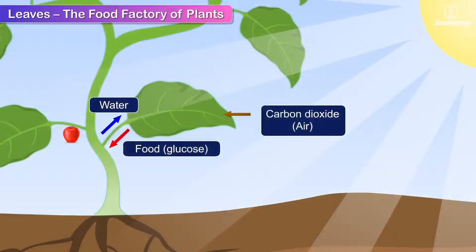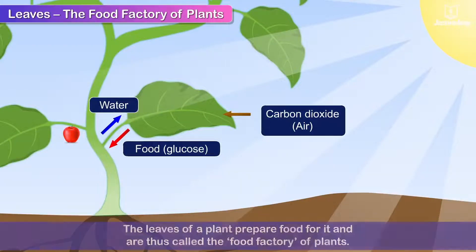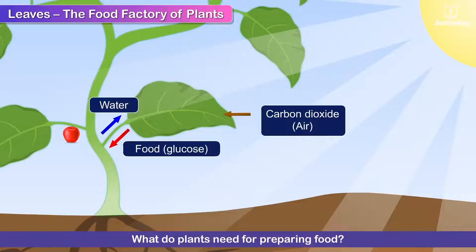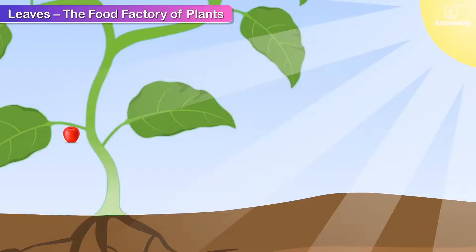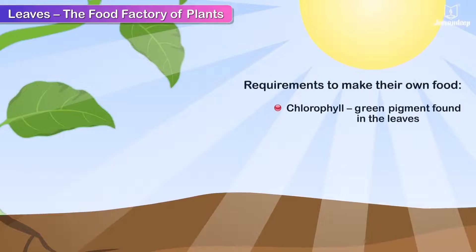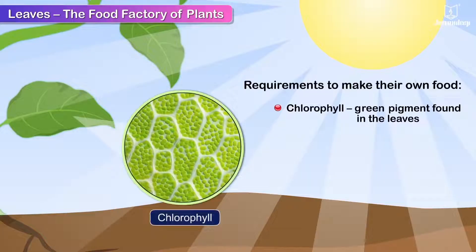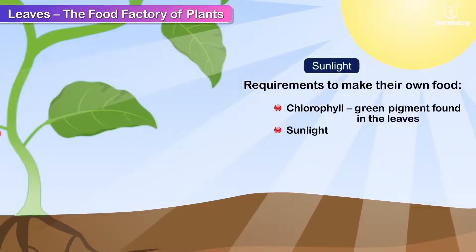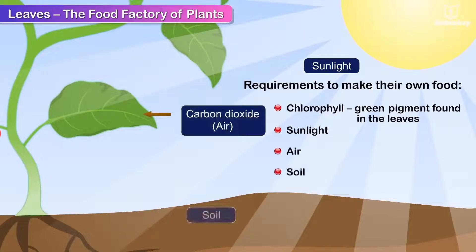Leaves: the food factory of plants. The leaves of a plant prepare food for it and are thus called the food factory of plants. Plants need several things to make their own food. They need chlorophyll, a green pigment found in the leaves of plants. They also need adequate sunlight, air, soil and water.